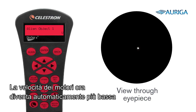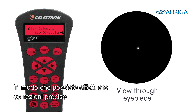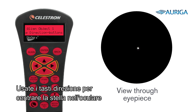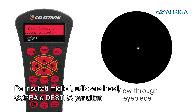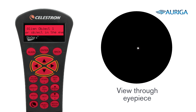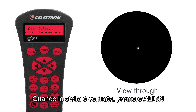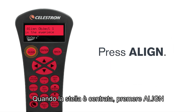The telescope's motors will now automatically slow down so you can make fine adjustments. Use the directional buttons to center the star in the eyepiece. For best results, use the up and right directional buttons last. When the star is centered, press align.